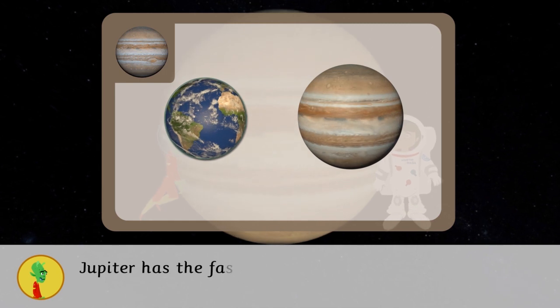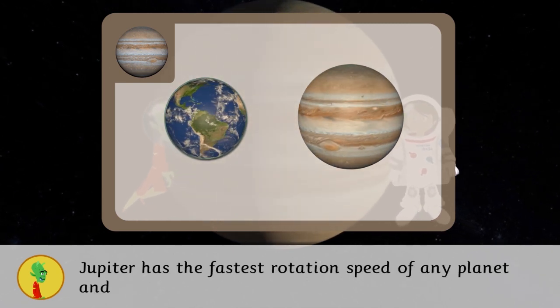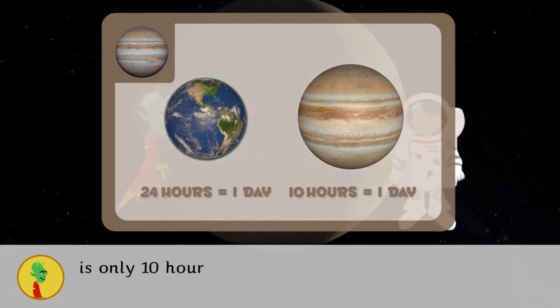Jupiter has the fastest rotation speed of any planet. One day on Jupiter is only 10 hours on Earth.